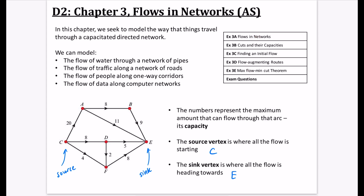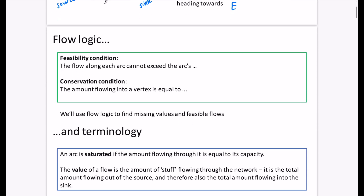Here are the parts we'll look through — this is just the introduction. We'll talk about cuts when you cut a network, how to find an initial flow, and flow augmenting routes, which is about finding the maximum flow through the system. Last of all, we look at the max flow min cut theorem, which should make intuitive sense. Then we'll do some exam questions. I really like this chapter — it has a lot of intuitive logic, which brings me to flow logic.